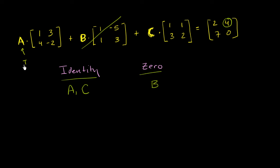So if this right over here is identity matrix, and that over there is an identity matrix, this whole thing simplifies to one, three, four, negative two, plus one, one, three, two. And it does indeed equal, one plus one is two, three plus one is four, four plus three is seven, negative two plus two is indeed zero.